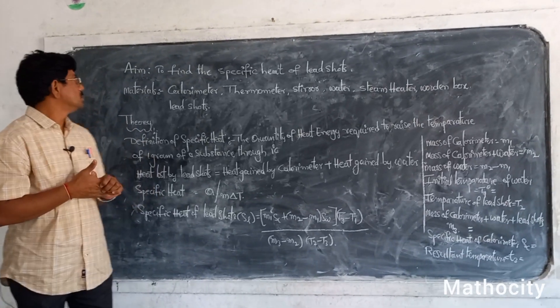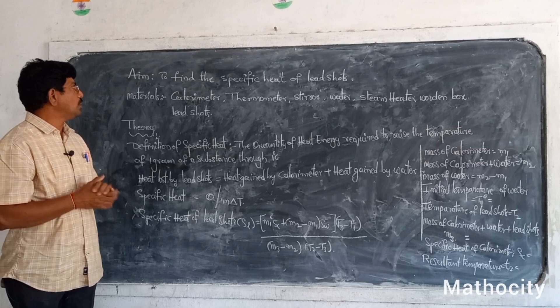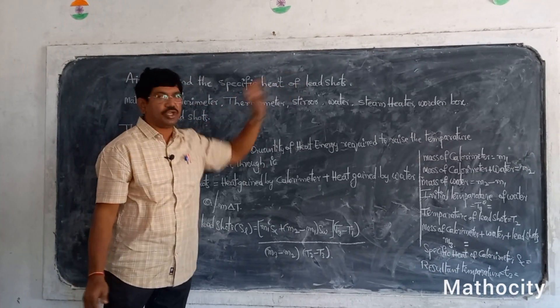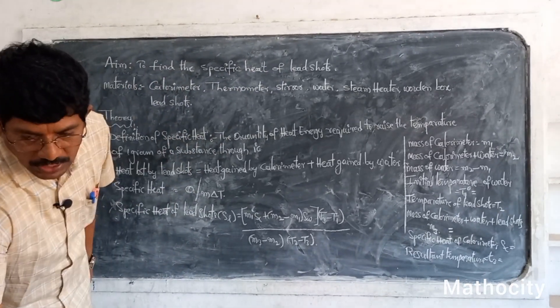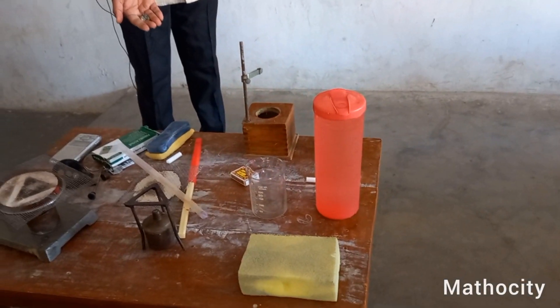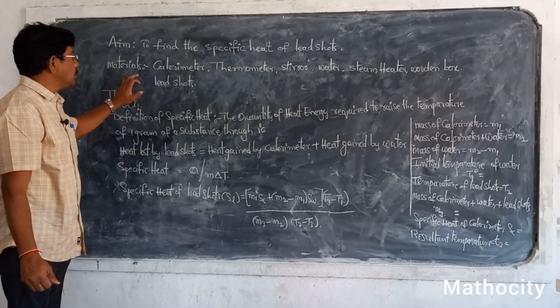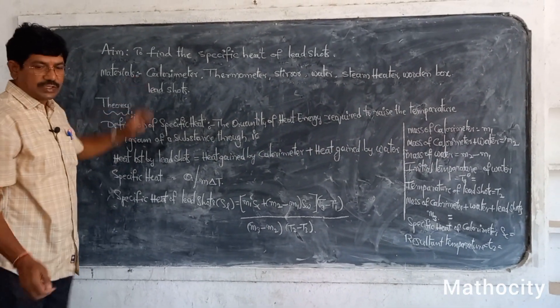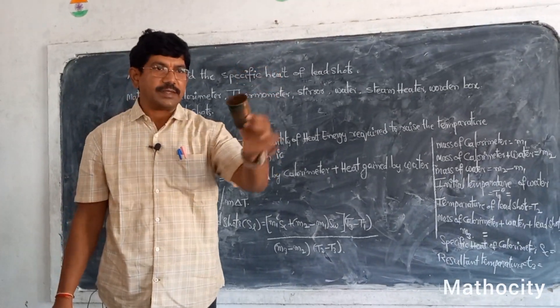Good morning children. In this session we are going to find the specific heat of lead shards. These are the lead shards. We are going to find the specific heat of these lead shards. First, let's look at the materials we are using. The first one is the calorimeter — this is made up of copper.